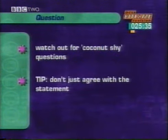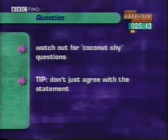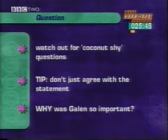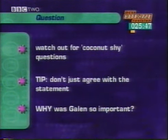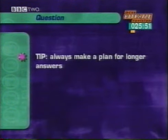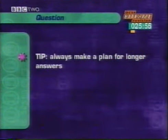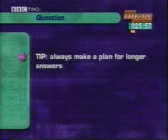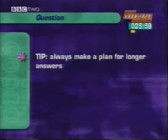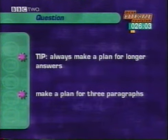Here's a tip: never agree with the coconut shy statement. Don't be misled by the examiner. Is it true he made mistakes? Above all, why was he important? With eight marks at stake, you should probably write about three paragraphs. Always make a plan for longer answers — examiners want an organised answer, not just a jumble of points. Stop the tape now and make a plan for three paragraphs on the importance of Galen.